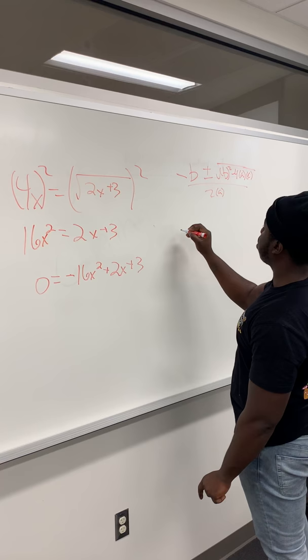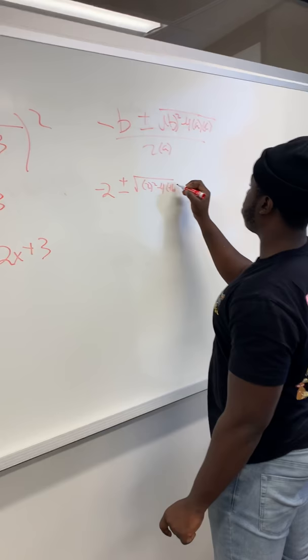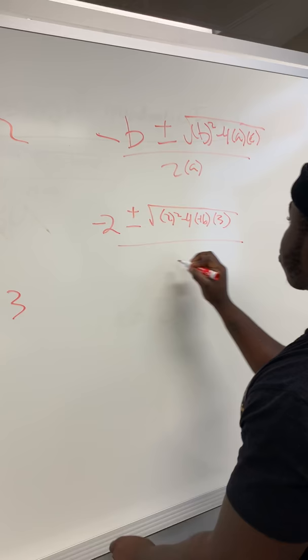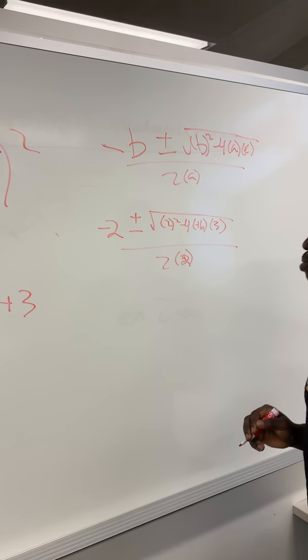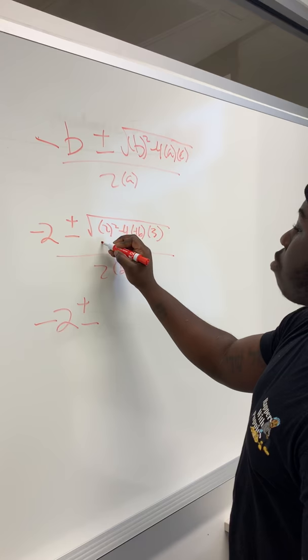To put this problem into this context it would be negative 2 plus or minus square root of 2 squared minus 4 times negative 16 times 3 all over 2 times negative 16.